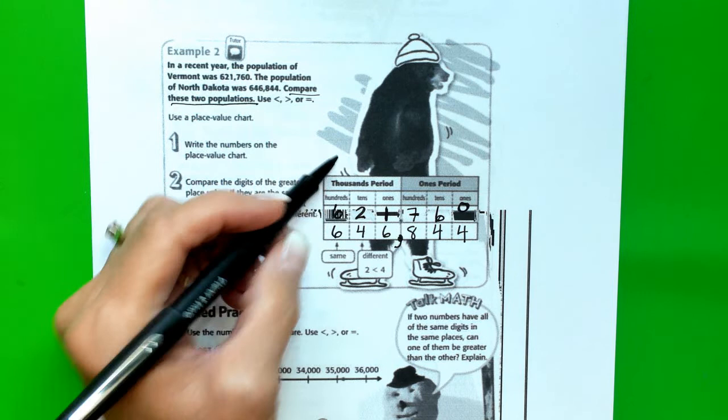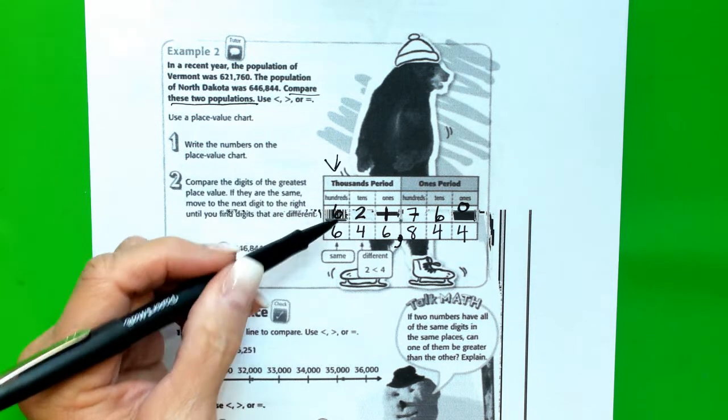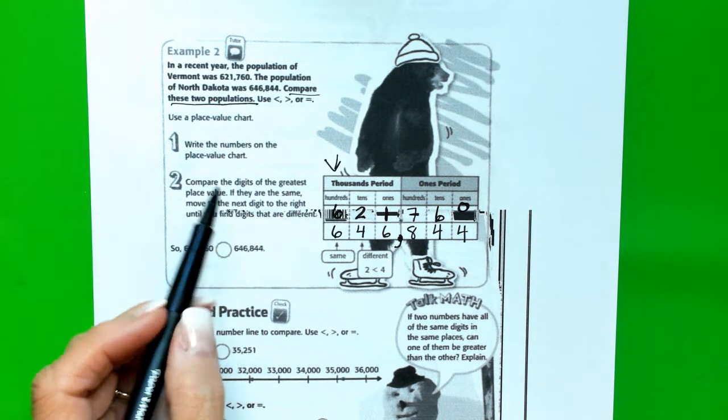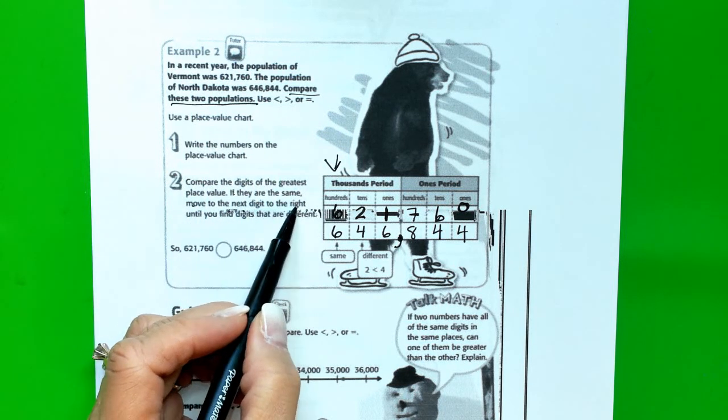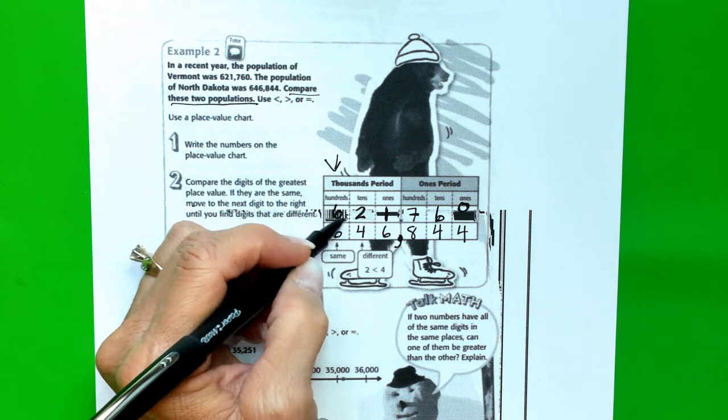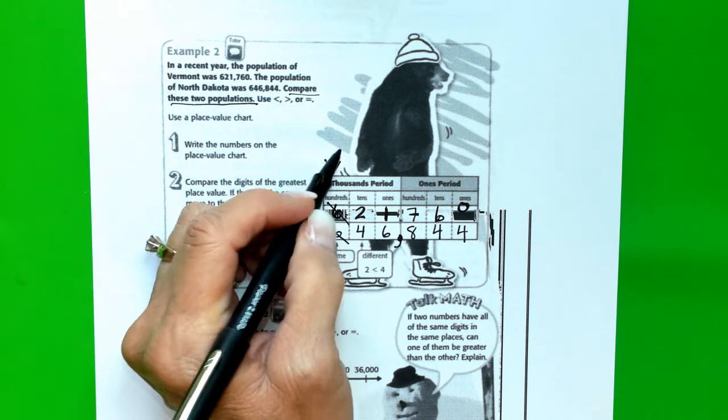So, the greatest place value is here. And the digits are the same. So, let's look and see what they say. If they are the same, move to the next digit to the right. So, these are the same. So, these aren't going to help us.